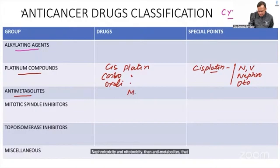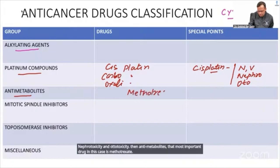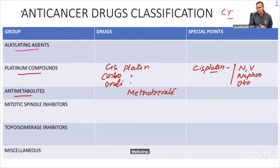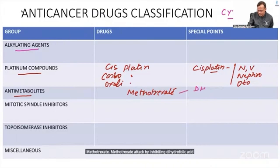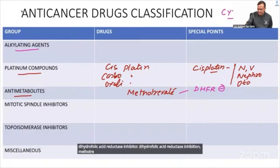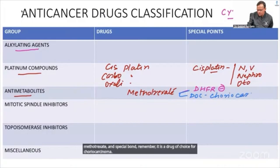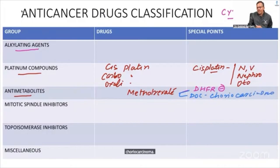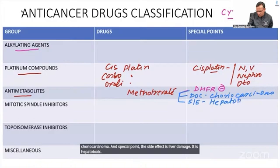The most important anti-metabolite drug is Methotrexate. It acts by inhibiting dihydrofolate reductase. It is the drug of choice for choriocarcinoma. Its main side effect is liver damage, so it is hepatotoxic and LFT monitoring is required.